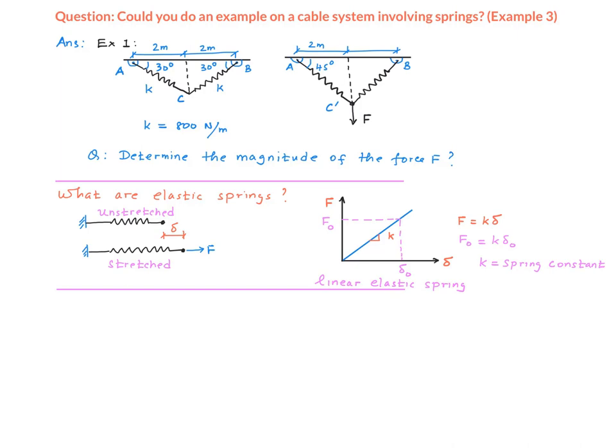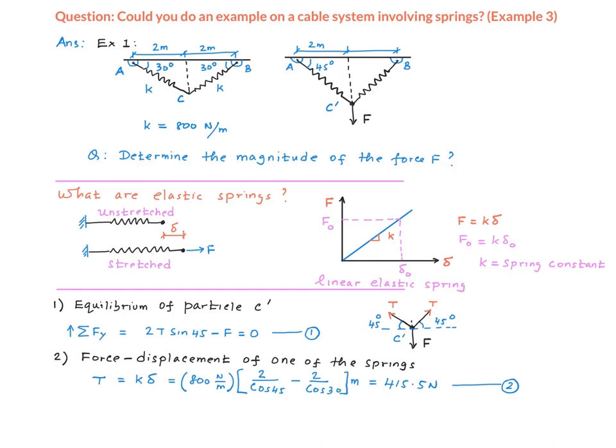The second type of fundamental we need is the relationship between force and displacement for a linear elastic spring. Here is the free body diagram drawn to point C' and here is my equilibrium equation applied in the vertical direction. I am denoting the tensile force in the springs as T. We have 2T sin 45 acting vertically up and force F acting vertically down, so those two must equal zero. That's equation number one.